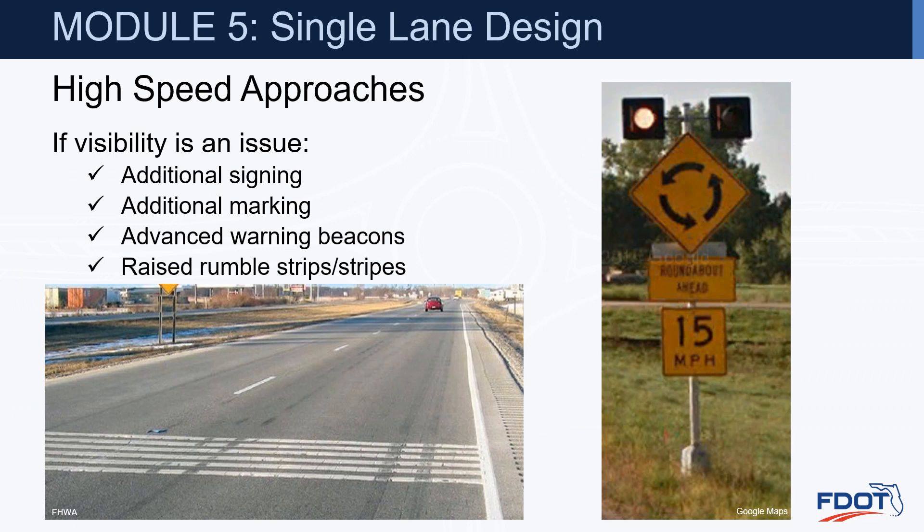If visibility is an issue or vehicles aren't slowing down as they should, you could look at additional signing, additional marking, advanced warning beacons, and even raised rumble strips or stripes could be implemented if you're having an issue with speed reduction on high-speed approaches. Hopefully the geometric elements are going to help get those vehicles to slow down in advance prior to the roundabout.